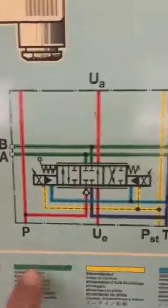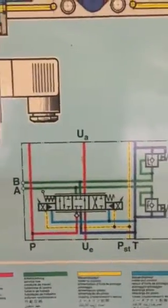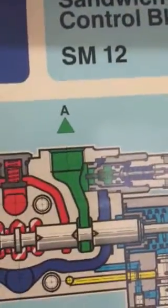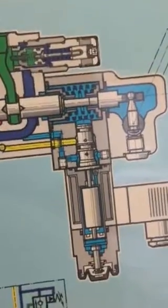This is the schematic diagram. These are the two proportional coils, and these are the relief valves — safety valves for the smooth operation of this proportional sandwich block. There are all types of section and delivery lines. This is called the Proportional Sandwich Mobile Control Block, SM-12 model number. The internal parts from electronic to hydraulic, and safety or relief valves, are also inbuilt.